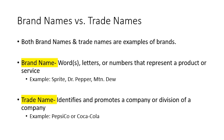Now let's look at trade names. A trade name identifies and promotes a company or division of a company. PepsiCo or Coca-Cola — those are trade names. Those are the companies that produce Sprite, Dr. Pepper, and Mountain Dew. So the trade name focuses on the company, while the brand name focuses on the product.